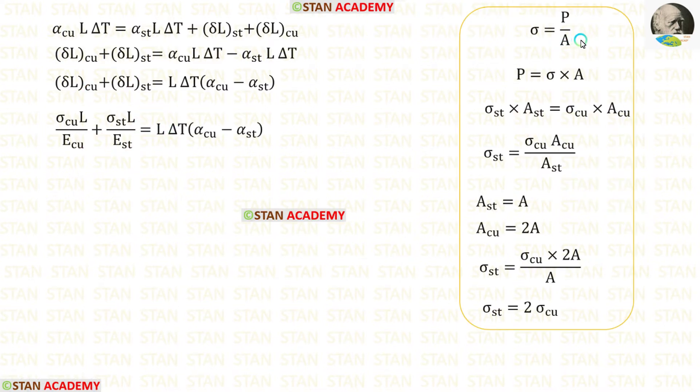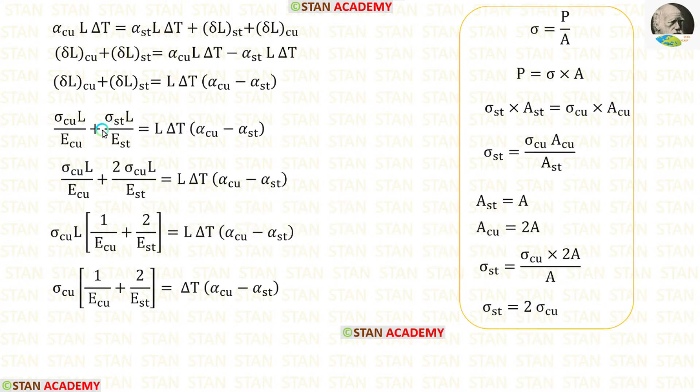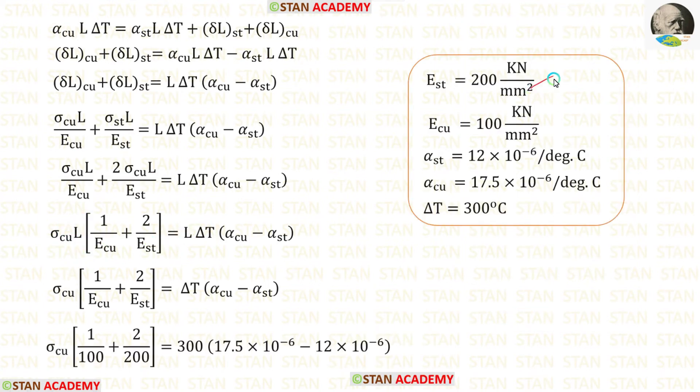We know that sigma is equal to P upon A. So P is equal to sigma into A. The value of P will be same in both of the materials. So we can write sigma St into A St is equal to sigma Cu into A Cu. We can take A St on the right side. It will come in the denominator. Let us apply the values of A Cu and A St. Finally, we are getting sigma St is equal to 2 sigma Cu. For sigma St, we can apply 2 sigma Cu. Let us take sigma Cu and L outside because they are common. Then we can eliminate L. Then let us apply the values of Est, E Cu, alpha St, alpha Cu and delta T.